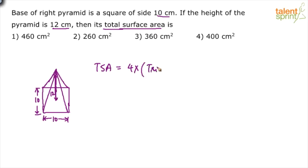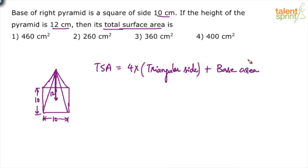Total surface area equals four times the triangular side area plus the base area. Base area is easy — the base is a square, so area is s squared: 10 squared which is 100. But what is the area of the triangular face? There are four triangular surfaces, which is why we take four times.